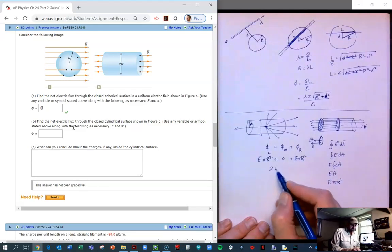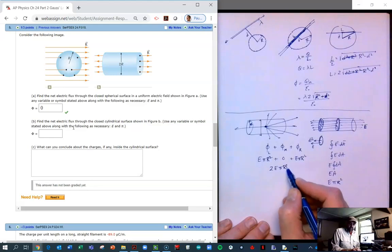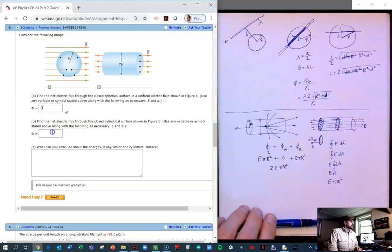So that's what the total flux is. And if we add it up, we get 2E pi R squared. So let's type that in symbolically.